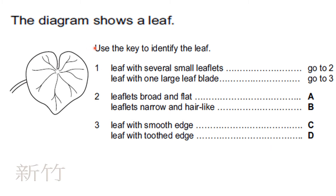The diagram shows a leaf — use the key to identify it. The first trait: leaf with several small leaflets or leaf with one large leaf blade? You can easily see this is one large leaf blade, so go directly to question three — no need to worry about question two. In question three: smooth edge or toothed edge? It is a smooth edge. So the answer is going to be C.